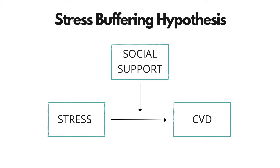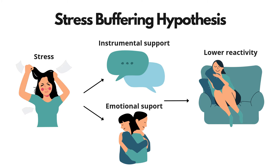Research has shown that social support can have a buffering effect on stress-related outcomes. The stress-buffering hypothesis suggests that the social support an individual has available to them weakens their perceived level of stress, thus maintaining and improving cardiovascular health. This illustration demonstrates how this applies to real life: a woman experiencing stress speaks to friends who give her instrumental support by discussing solutions and emotional support by being there for her, which lowers her reactivity to stress.